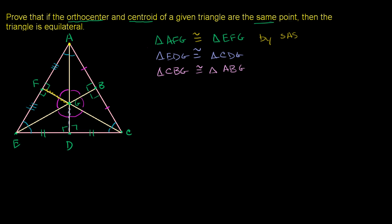Now, angle EAC is just two blue angles. Angle ACE is also two blue angles. And angle CEA is likewise two blue angles. So triangle EAC has all three angles congruent — meaning it is an equilateral triangle. Since all three angles are equal, each is 60 degrees, and all three sides are equal in length. This completes the proof.